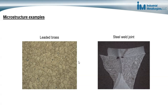The sample on the left shows a leaded brass — you can see grains of brass and gray particles of lead. Lead is added to brass to improve its machinability. Other features might also be present in micrographs, such as phases at the grain boundary that might weaken the material, indicating problems with the alloy. In this case there is nothing to indicate a problem in this leaded brass. The image on the right is a weld joint in carbon steel, and looking at the micrograph helps us understand whether the part was welded properly and gives some sense of the composition of the alloy.